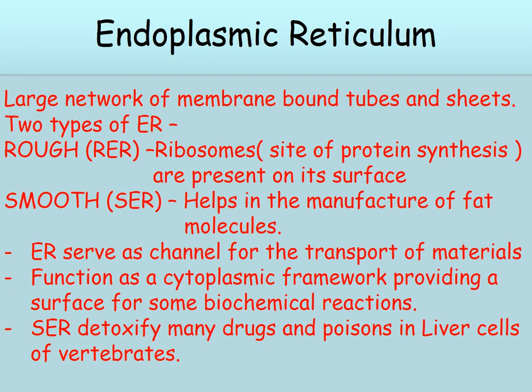First is endoplasmic reticulum. It is a large network of membrane-bound tubes and sheets. There are two types of ER: rough endoplasmic reticulum and smooth endoplasmic reticulum. In rough endoplasmic reticulum, ribosomes are present on its surface. Smooth endoplasmic reticulum helps in the manufacture of fat molecules.